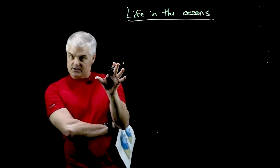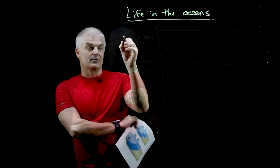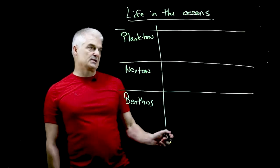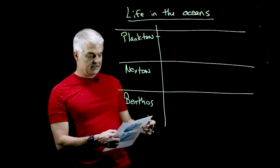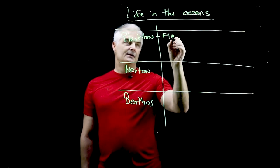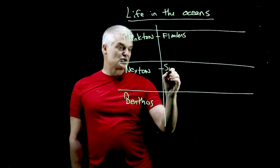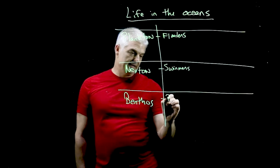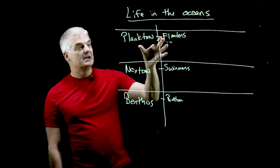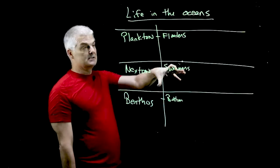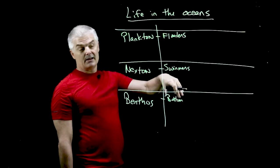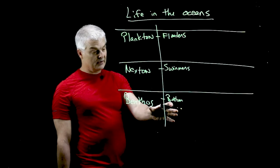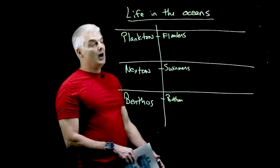Let's talk about the way that scientists categorize life in the ocean. There are three big categories: plankton, nekton, and benthos. Plankton means literally 'the floaters,' nekton means 'the swimmers,' and benthos means 'bottom.' Some living things just float, some can swim on their own, and some live on the bottom.